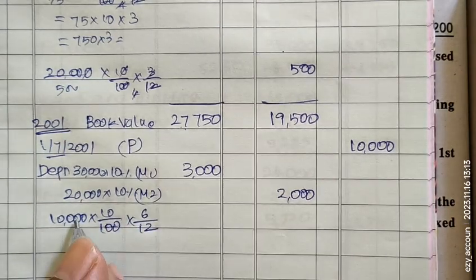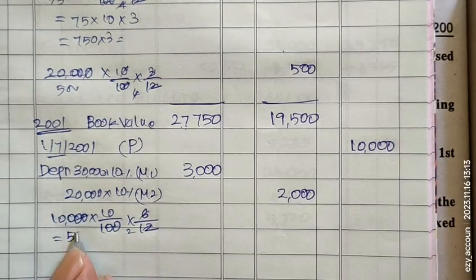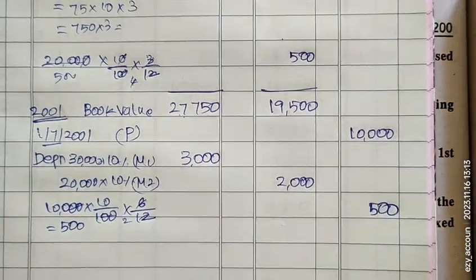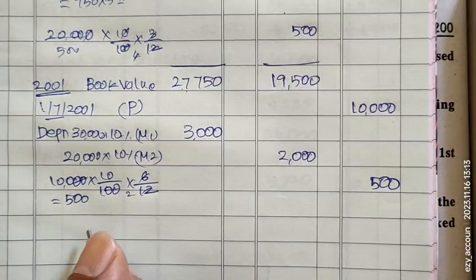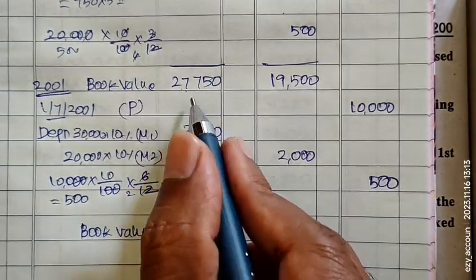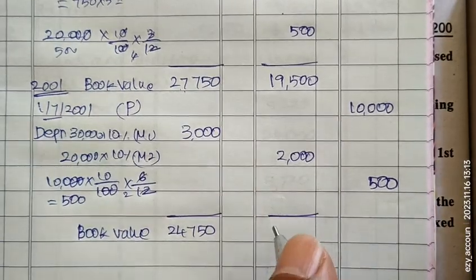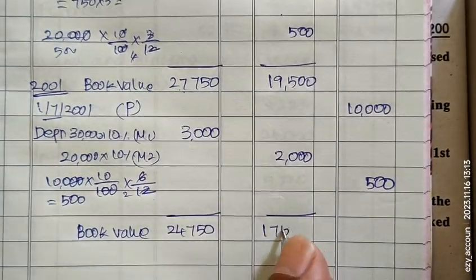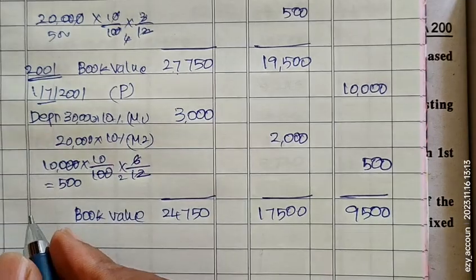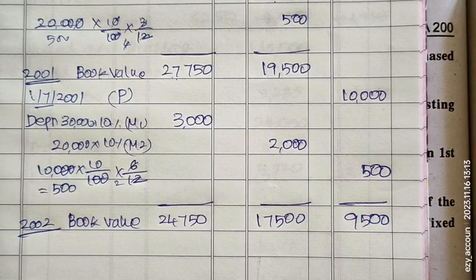The figures show: the book value is 27,350; then 17,500; and 9,500. Machine 2 has a balance of 500, and there are secondary and third year figures to work through. The depreciation rate of 10% gives a result of 50 higher.